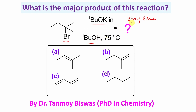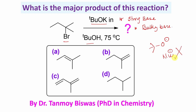Remember, not only is it a strong base — potassium tertiary butoxide is also a bulky base. These two points are very important regarding potassium tertiary butoxide. So what can it do? It can result in elimination reaction. Because of the bulky nature of this tertiary butyl group, it cannot act as a nucleophile. So the nucleophile part is off. But it can act as a base — more specifically, a strong and bulky base.